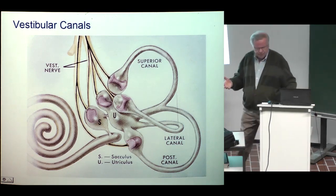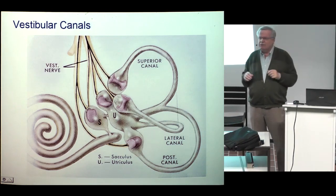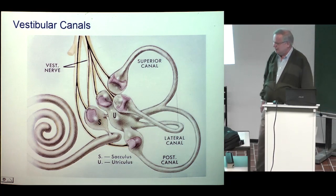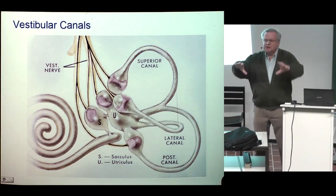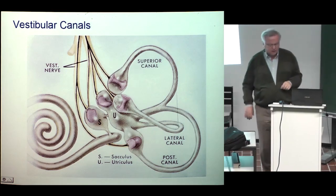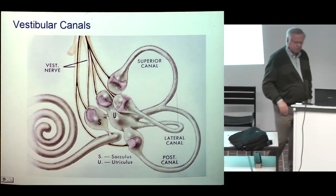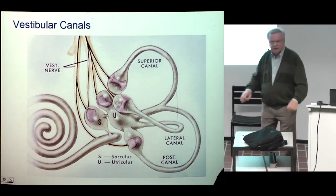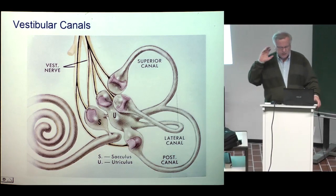In normal life we get the most important information of balance with vision. Some of you may have visited amusement parks with a movie theater where the whole wall is a movie screen with a special film effect — people are standing in the theater and suddenly they all fall down, because the movie gives an illusion of unusual balancing. So visual information is number one in our balancing. Number two comes from how we feel and sense our body from muscles and bones. And number three is coming from the vestibular organ.